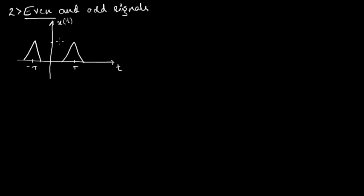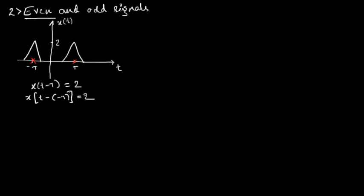Call this position as capital T and this as minus t, and say this has an amplitude of 2. If we calculate the value of x of t at position t, it is 2 — so x of t equals 2. If we calculate the value of x of t at minus t, it is again 2 — so x of minus t also equals 2.